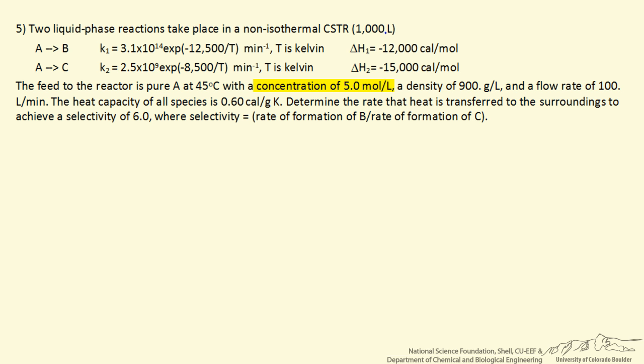So we're given information about the feed, the density of the feed, flow rate, heat capacity, density, and we want a selectivity of 6. With these two reactions we want selectivity, namely the rate of formation of B divided by the rate of formation of product C, we want that number to be 6.